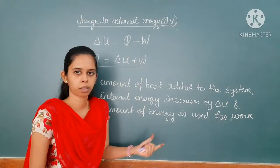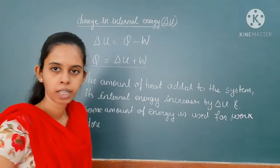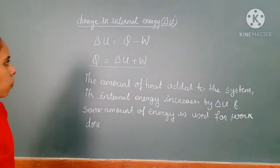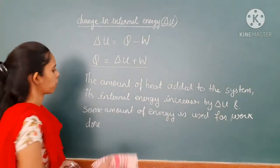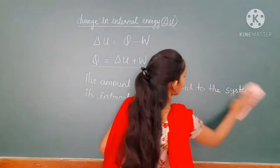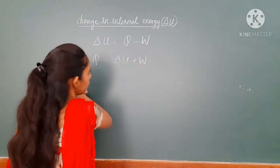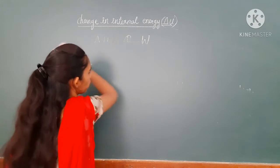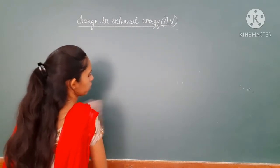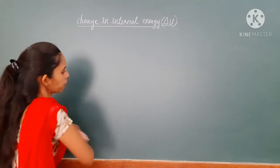So this is nothing but change in internal energy. Now we have to see when this internal energy will become positive, when it will become negative, and when it will become zero. So we can represent it diagrammatically.